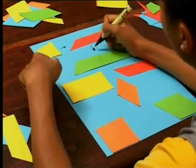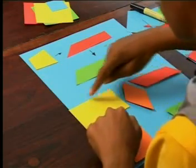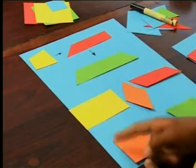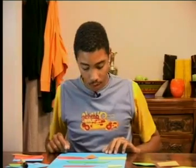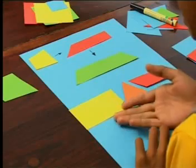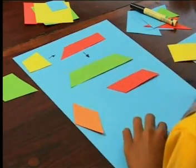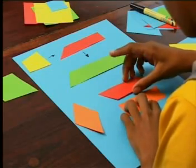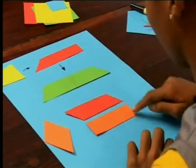So are you using shapes with equal sides as the basis to link up your diagram? Yes, and I'm using those shapes and putting them in smaller groups if they have properties that are a little bit different. These groups have two pairs of equal sides, and these groups have four equal sides. I've got a parallelogram, a kite, and a rectangle. I'm going to move the kite over here because it doesn't have opposite equal sides, and I'm going to put the rectangle under the parallelogram, because although they both have opposite equal sides, the rectangle has something extra — all its angles are equal as well.